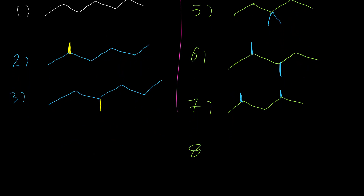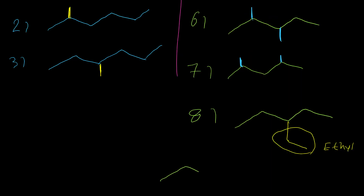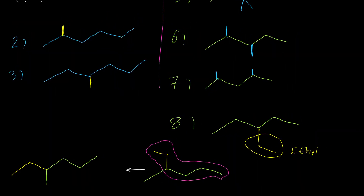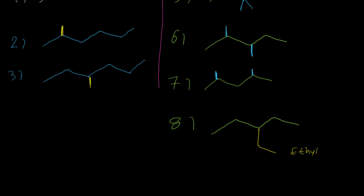We have another option: five carbons in the chain with an ethyl group on the middle carbon. Keep in mind we are not able to put the ethyl group on the second carbon, because after placing it there, we would effectively have six carbons as a chain — making that structure exactly the same as isomer number three. So we don't have any other options for a five-carbon main chain.